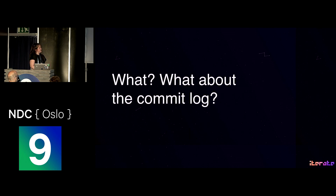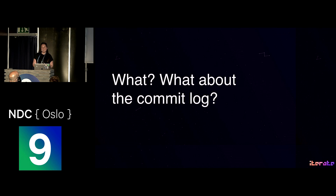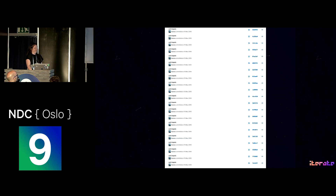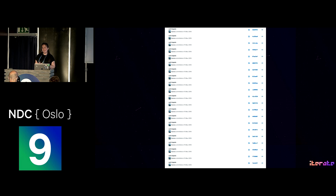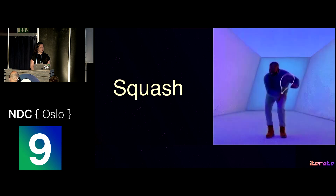The last concern I want to talk about is the commit log. Since we were only two developers on our project, we just committed it all — and our commit log ended up looking like this, with a lot of small incremental commits. But if you're working on a larger project and want to try out TCR, you can use TCR on a feature branch and just squash it.